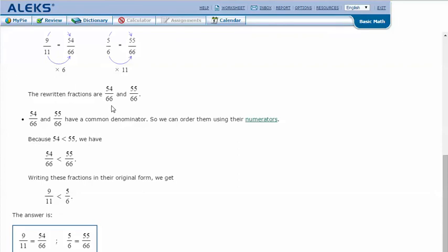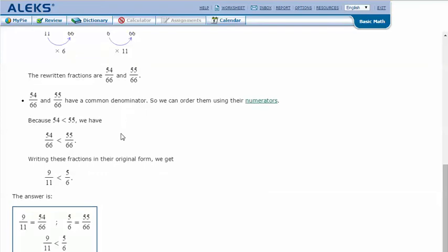The rewritten fractions are 54/66 and 55/66. So now we can clearly see which one's larger and which one's smaller. 54 is less than 55. So we have 54/66 is less than 55/66. Writing these fractions in their original form, so 54/66, the 54 was with 9/11.